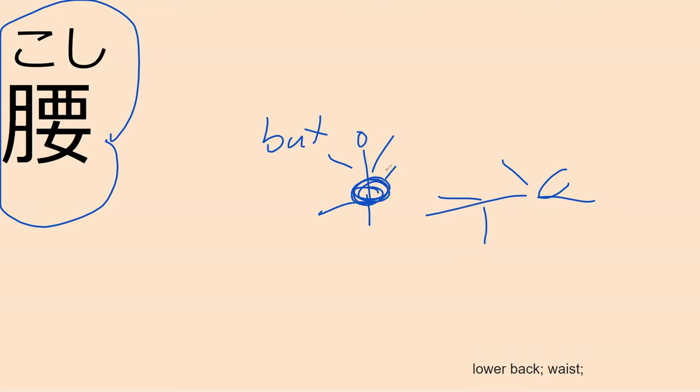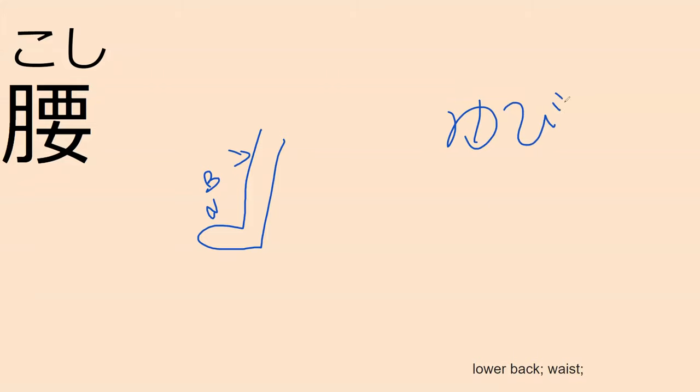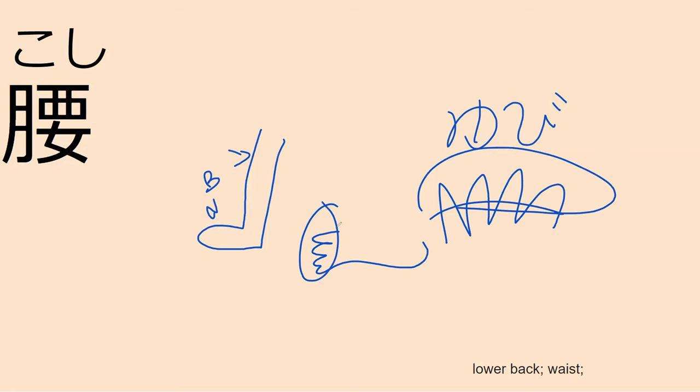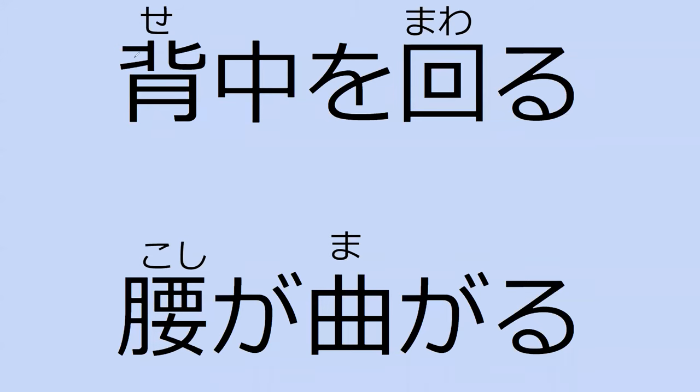So 腰 is a word that officially means your lower back or waist, but there are contexts where it means your butt — like 'you land on your 腰.' It's basically this whole lower waist and butt area. In the context we're going to see, it's referring to the lower back. Also, just like ashi can mean foot or leg, and yubi means fingers but can also refer to toes — Japanese body part words can be ambiguous.